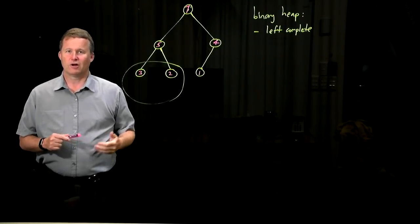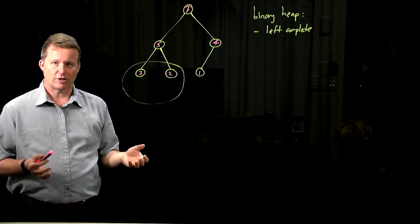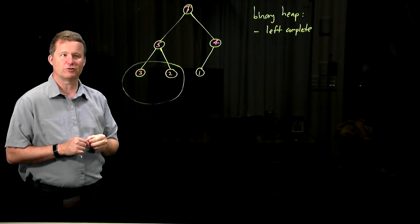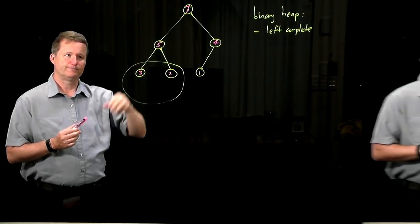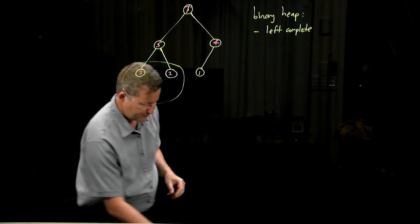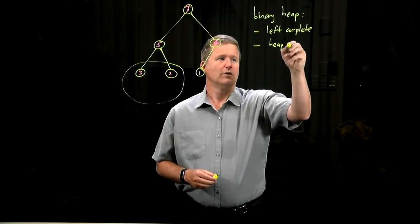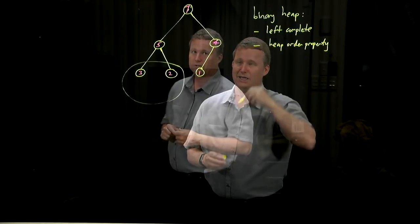You'll notice from later on a binary heap is not as constrained as a binary search tree. And they're not that closely related. They are both binary trees, but they have very different rules. They have very different ways of comparing the values of the nodes. So it must be left complete and also satisfy the heap order property. And the heap order property is exactly what we just said.